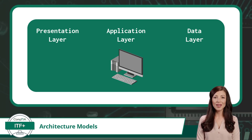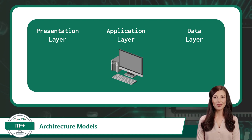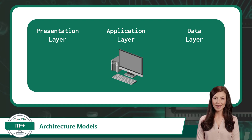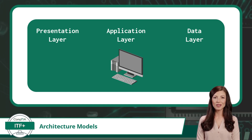To better understand the one-tier architecture, imagine a computer game that runs entirely on your personal computer or workstation. Your computer becomes the complete application ecosystem. The game's graphics, sounds, user interface, logic, and data storage are all bundled together and operate within your computer's resources. While this approach is suitable for simple and standalone games, it may encounter challenges when dealing with more complex and larger-scale applications.